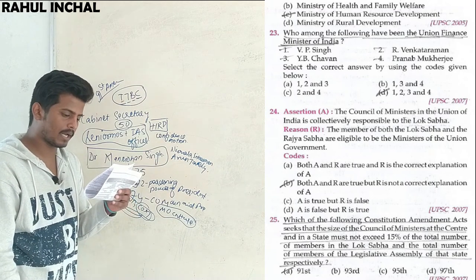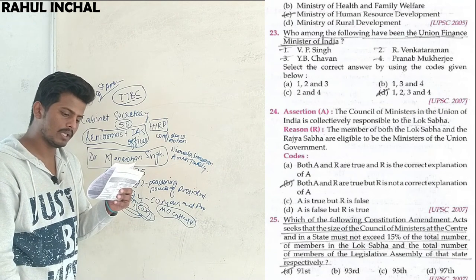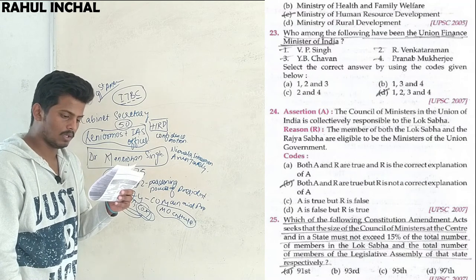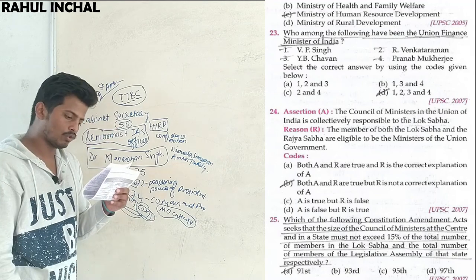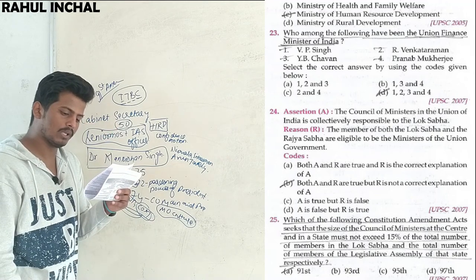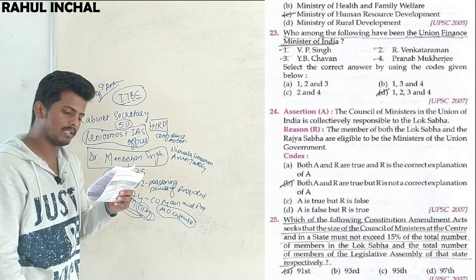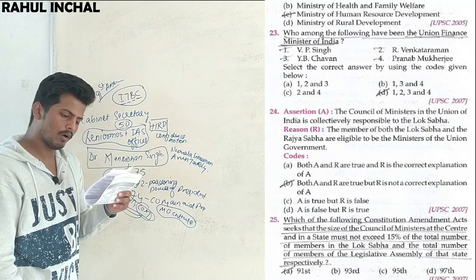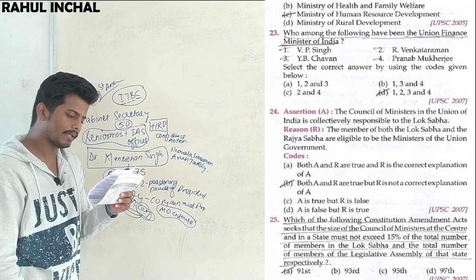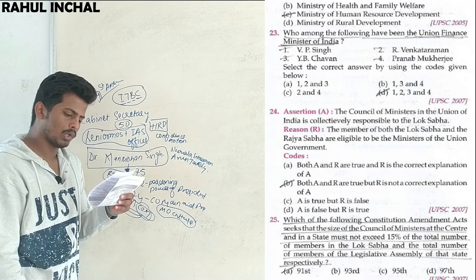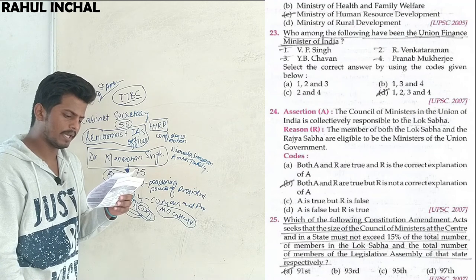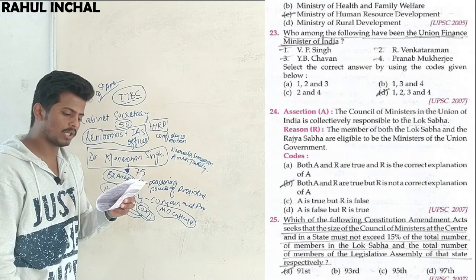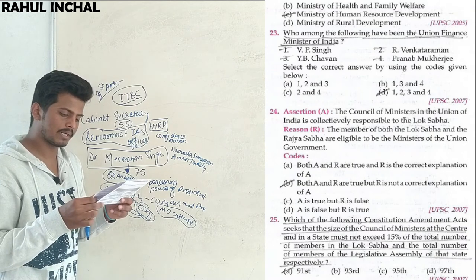This is an assertion-reasoning type question. Assertion: The Council of Ministers in the Union of India is collectively responsible to the Lok Sabha — this is correct. Reason: Members of both the Lok Sabha and the Rajya Sabha are eligible to be ministers of the Union Government — this is also correct. However, R is not the correct explanation for A. So both A and R are true but R is not the correct explanation for A.